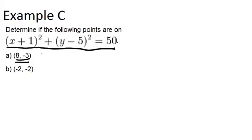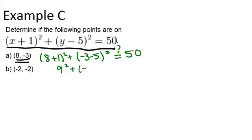So we're going to plug in 8 for x, so that's 8 plus 1 squared, plus and then negative 3 for y, negative 3 minus 5 squared. And we're going to see if that equals out to 50. So we end up with 9 squared plus negative 8 squared, and we're seeing if that equals 50. 9 squared is 81, and negative 8 squared is 64, and that definitely does not equal 50. Therefore, this point, a, is not on the circle.